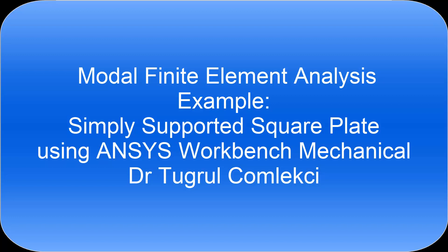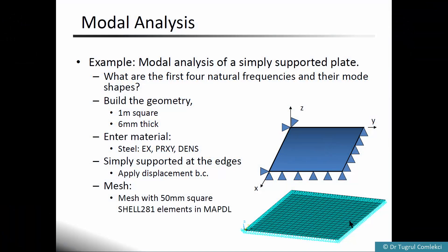In this video tutorial I'll look at a modal analysis of a square plate made of steel which is 6 millimeters thick. We'll support the edges simply just in the Z direction and two of the corners will support in X and Y directions respectively so that there is no rigid body motion on the XY plane.